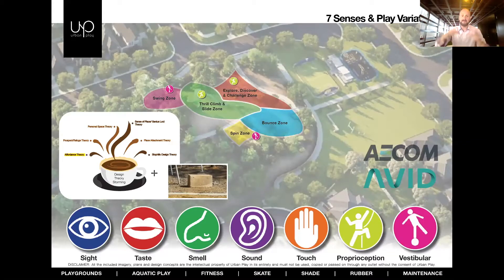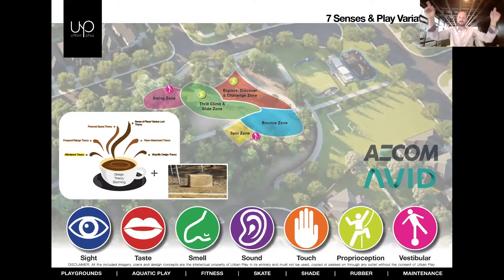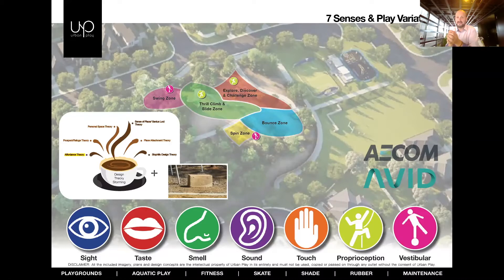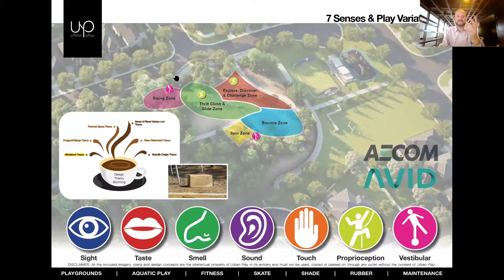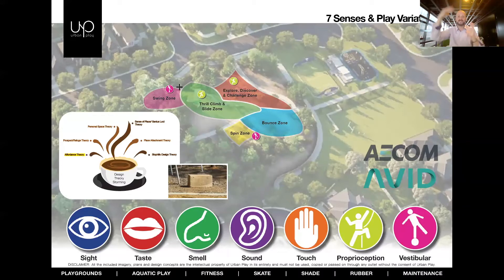We always do a seven senses and play variations overlay for our designs. The best park designs provide choices for all — designing zones or play rooms. Rather than everything in one concrete area, we create distinct zones: a swinging zone within the trees for vestibular stimulation and quiet engagement; a thrilling climbing-and-sliding zone with a big tower as a visual landmark providing thrill and challenge; and a junior play area stepping down from there.